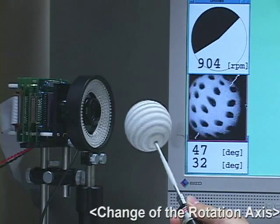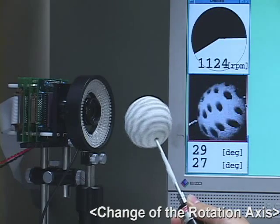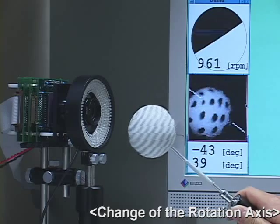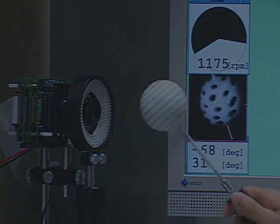The rotation axis of the object is changed by hand. From the result on the display, we can see that the measurement is done correctly.